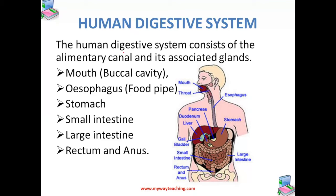The human digestive system consists of the alimentary canal and its associated glands. The alimentary canal consists of the mouth, oesophagus, stomach, small intestine, large intestine, rectum and the anus. The associated glands consist of salivary glands, liver and pancreas.